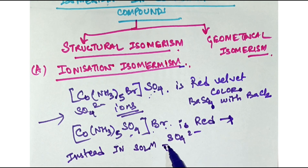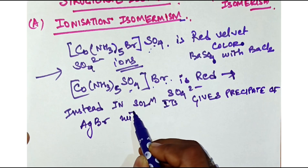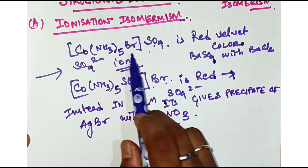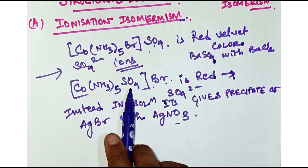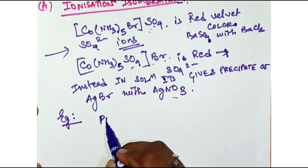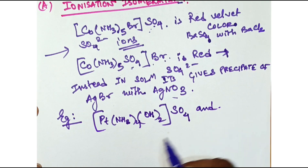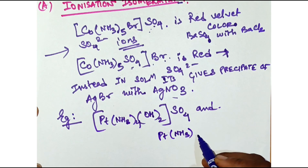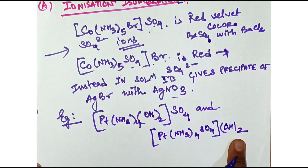The second compound does not give a sulfate test. Instead, in solution it gives a precipitate of silver bromide when treated with silver nitrate, confirming the presence of bromide ion. So here the solution confirms the presence of bromide ion. In these complex compounds, they break down into different ions in solution — the groups exchange positions inside and outside the coordination sphere.